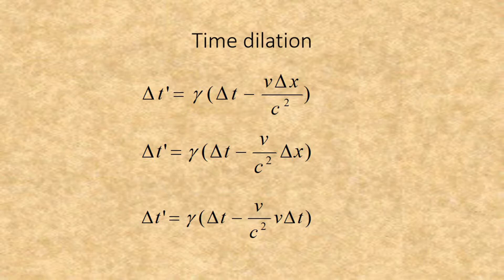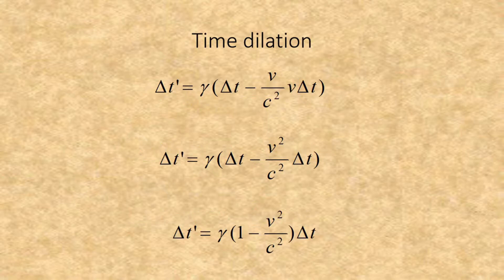So here we start with delta t prime equals gamma times delta t minus v times delta x divided by c squared. Next, we separate out delta x, which becomes v delta t. This gives us delta t prime equals gamma times delta t minus v over c squared times v delta t.